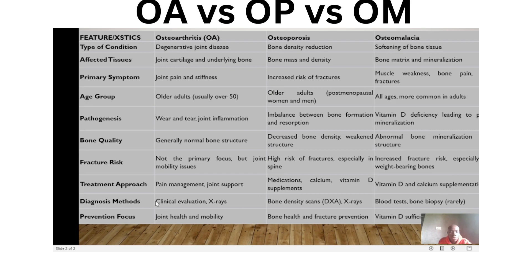For diagnosis: osteoarthritis is assessed using clinical evaluation, and x-rays can show cartilage and underlying bone deformities. Osteoporosis uses bone density scans and x-rays. Osteomalacia uses x-rays, blood tests, and biopsy. For prevention: osteoarthritis focuses on joint health and mobility, osteoporosis on bone health and fracture prevention, and osteomalacia on correcting vitamin D deficiency and bone health.